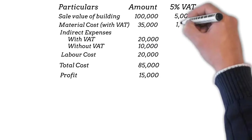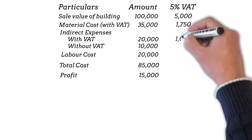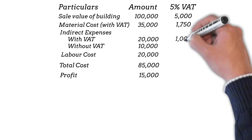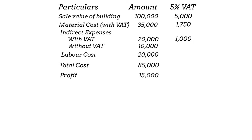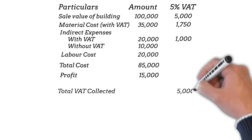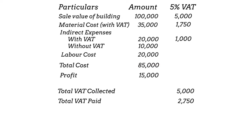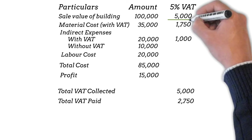We will arrive at the same figure if we calculate the VAT liability as VAT collected minus VAT paid. Here the VAT collected is 5% of the sale value of 100,000, which comes to 5,000, minus the VAT paid.